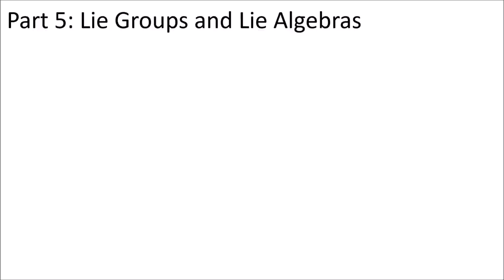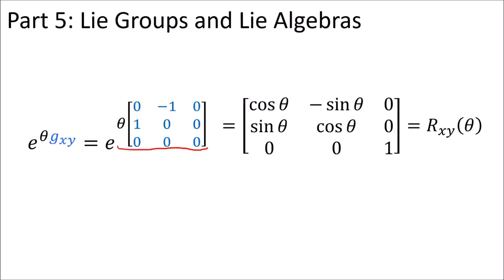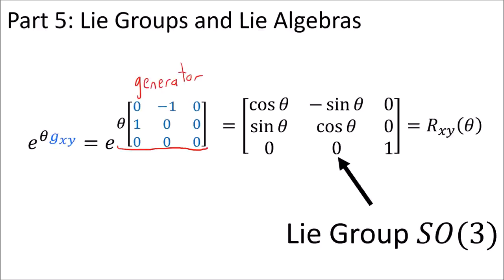In part five I talk about Lie groups and Lie algebras. I show that if we exponentiate this matrix here times theta we get a rotation matrix in the XY plane. The rotation matrix is part of the Lie group SO(3) and this matrix we exponentiate is called a generator and it's part of the Lie algebra so(3).